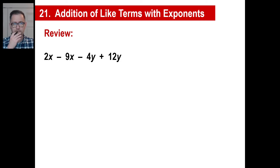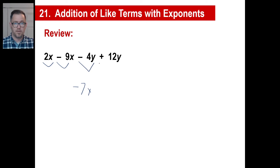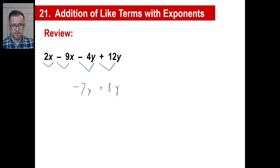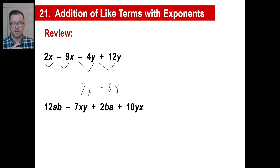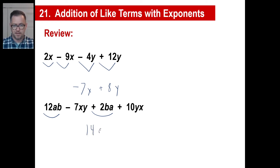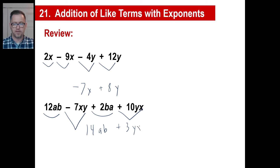So let's go back and look at like terms first. You know how to do these: there's a 2x minus 9x, which gives negative 7x. Then negative 4y plus 12y gives positive 8y. That's it — we stop right there. And in the second problem, look at ab: 12ab plus 2ab is 14ab. And negative 7xy plus 10xy gives 3xy.